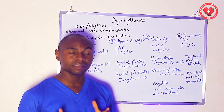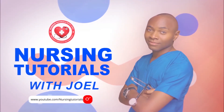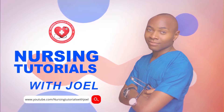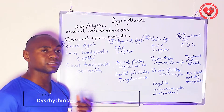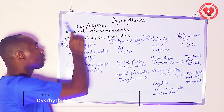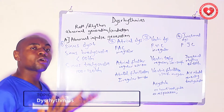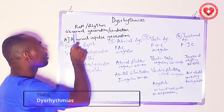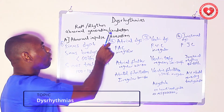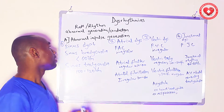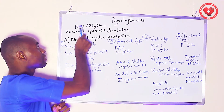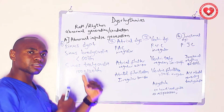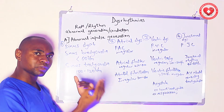Dysrhythmias are disease conditions — they are not normal. Dysrhythmias are abnormalities of heart rates or heart rhythm, which occur as a result of abnormal generation or conduction of impulses. When we talk about heart rates, we are talking about the number of heartbeats per minute.